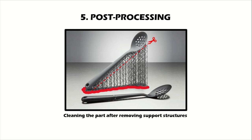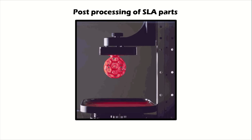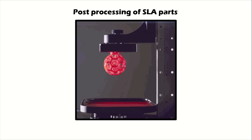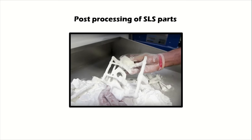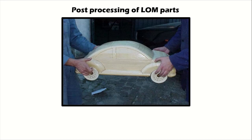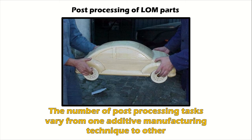The cleaning task refers to the removal of excess material that may have remained on the part. Post-processing is different for different additive manufacturing techniques. For SLA (stereolithography) parts, this refers to removing excess resin in enclosed portions such as blind holes. For SLS (selective laser sintering) parts, the excess powder has to be removed. For LOM (laminated object manufacturing) parts, pieces of excess wood-like blocks of paper which acted as supports have to be removed. The number of post-processing tasks varies from one technique to another, and for safety reasons specific recommendations for post-processing tasks must be prepared.